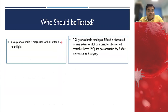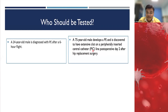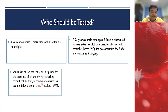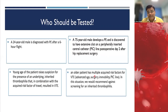Consider two situations: a 25-year-old male diagnosed with pulmonary embolism after a six-hour flight, versus a 75-year-old male who develops pulmonary embolism found to have extensive clot around a peripherally inserted central line, two days postoperatively after major hip replacement surgery. In the first case, the patient is young with a minor precipitating factor — thrombophilia workup is indicated. In the second, multiple strong risk factors are present, so thrombophilia workup is not required.